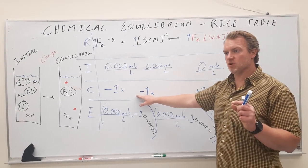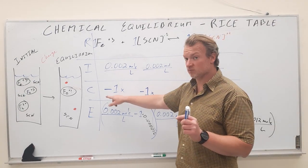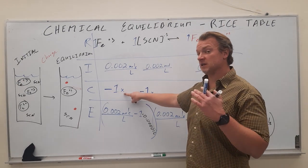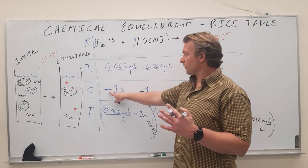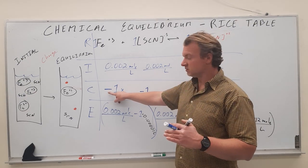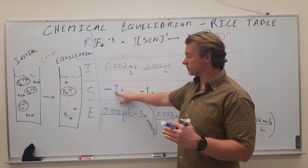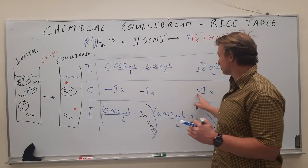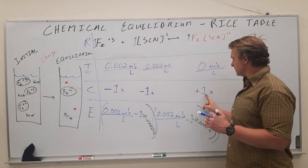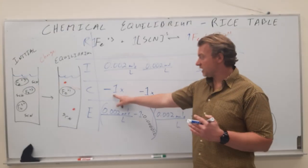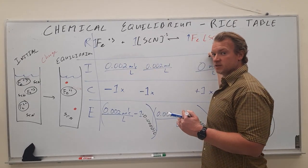The changes, this is probably the most confusing row because each of these three terms is just a logical step. The reactants go down because they're starting as high as they can. And we're starting with zero products. So the products will go up.